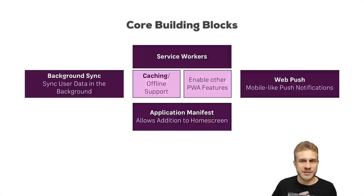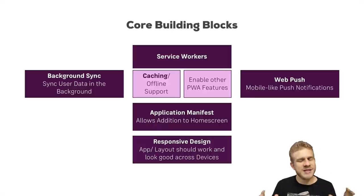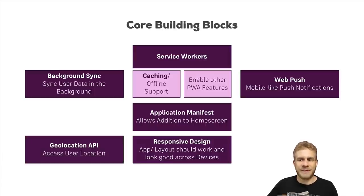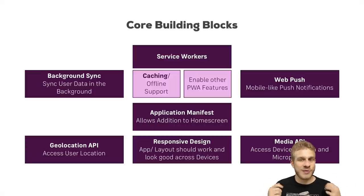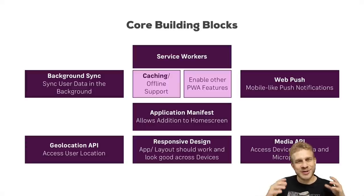Responsive design is another core building block, though I won't dive too deeply into it in this course as there are whole courses covering it. I'll touch on it but focus on the new technologies. There are also other things like the geolocation API and the camera API to access various native device features. In the end, always keep in mind: progressive web app is just a term. In its closest definition it refers to an app which uses service workers and has an application manifest, but it typically also means applications which are responsive, offer background sync, use web push, and more.